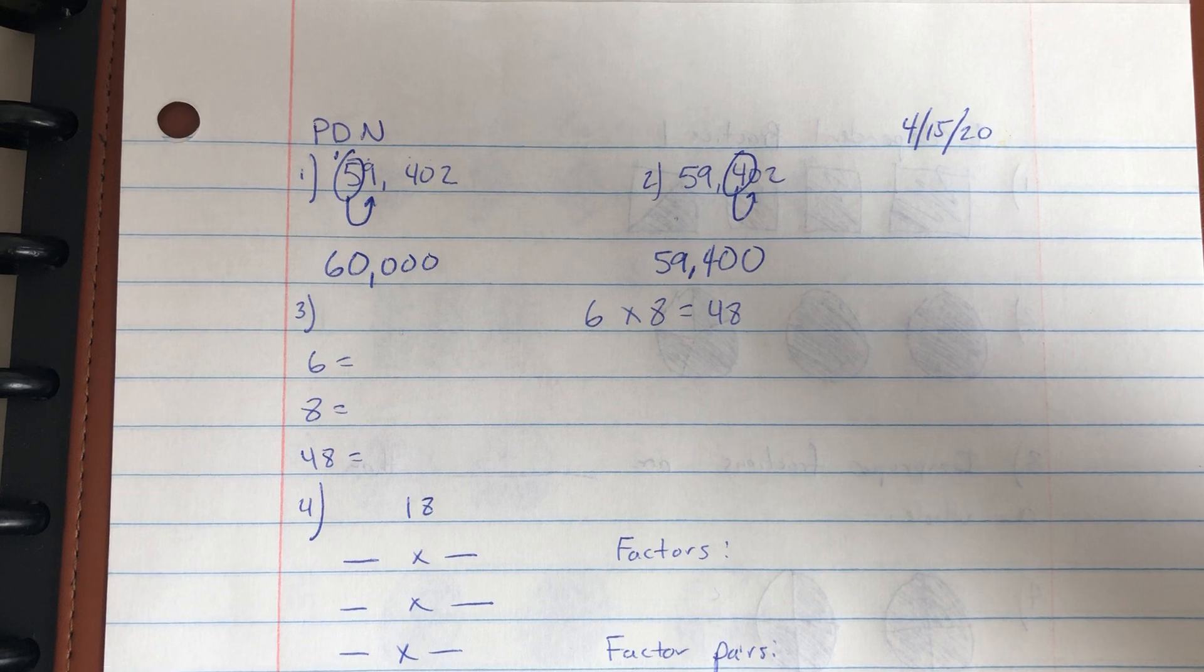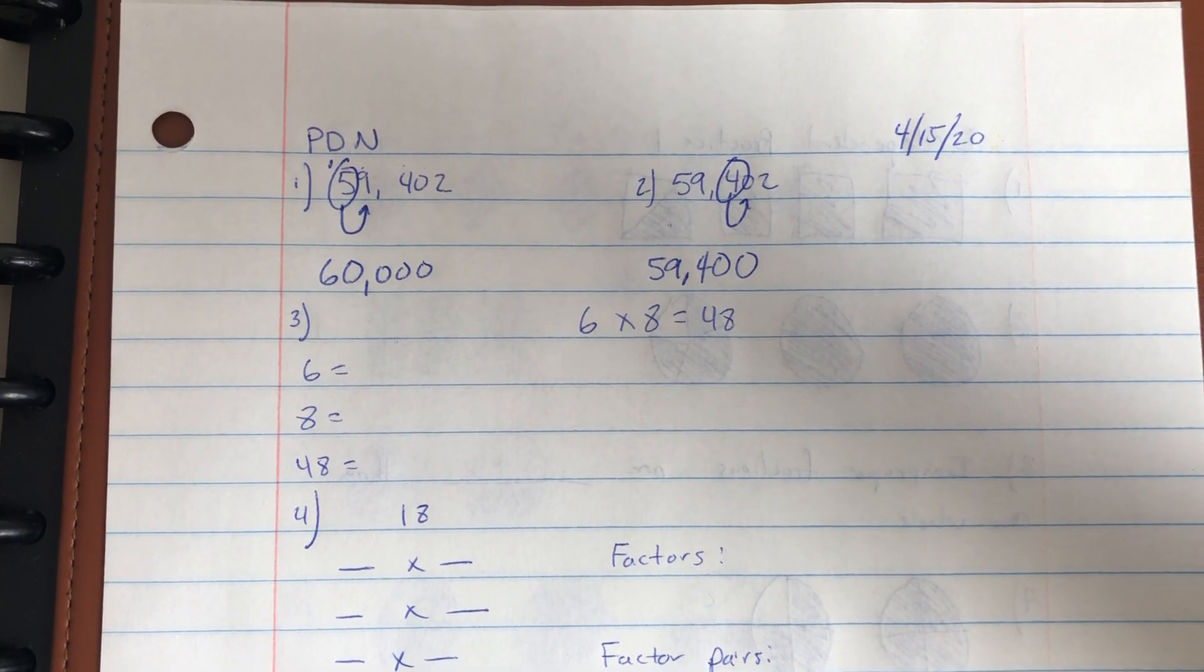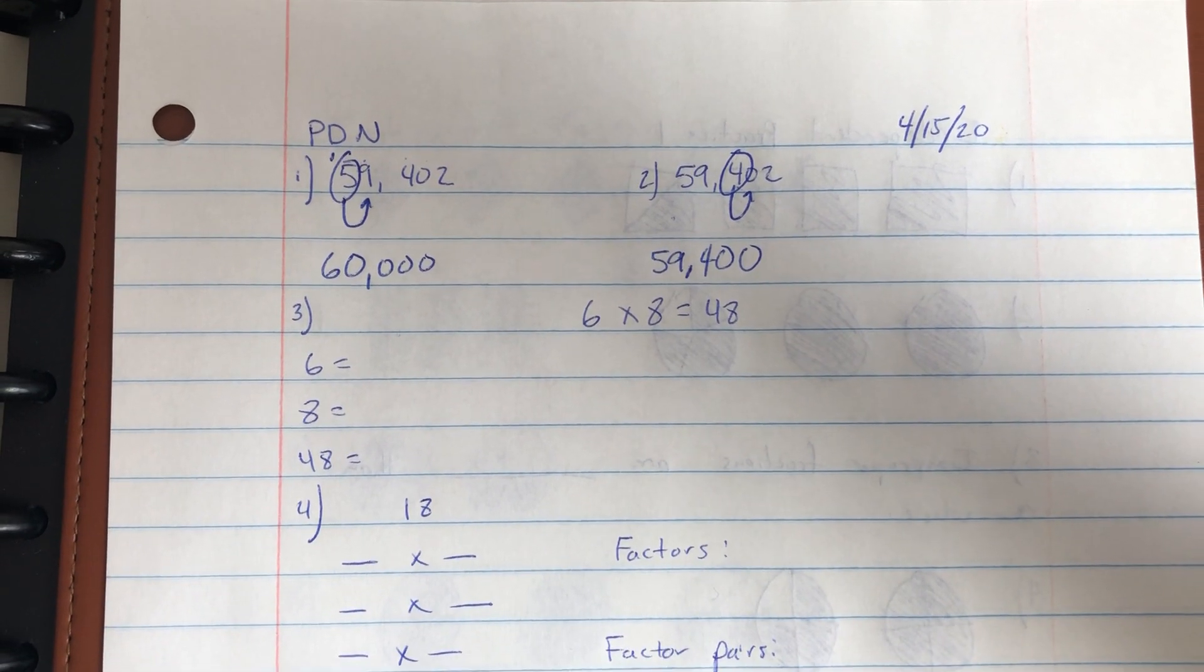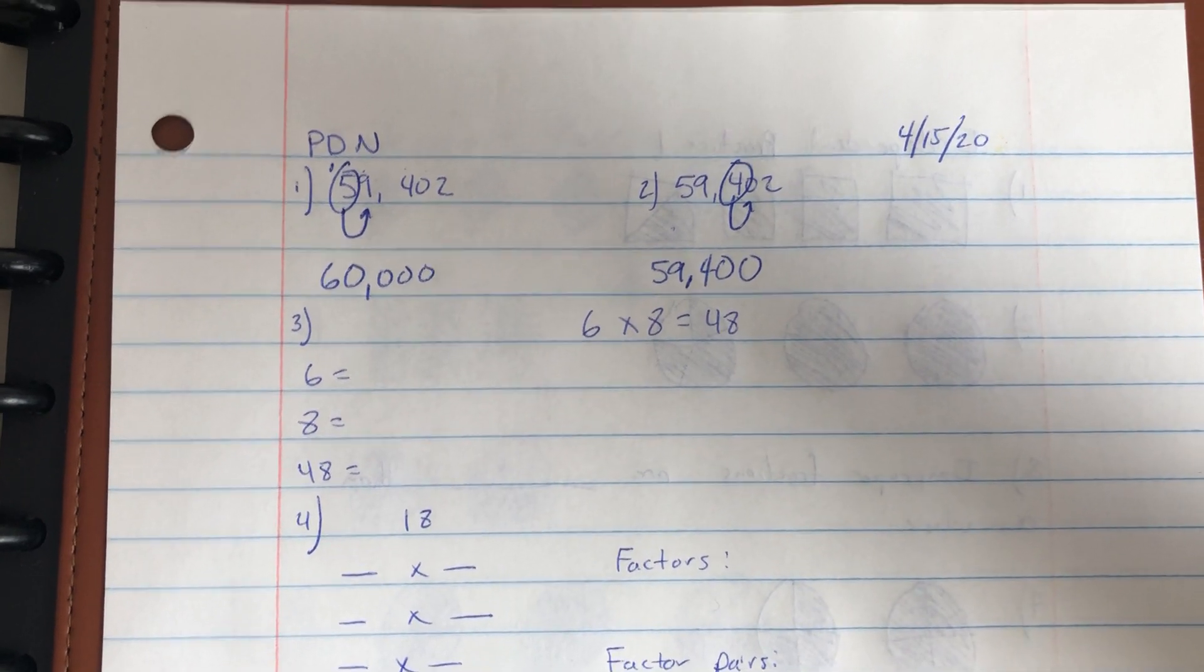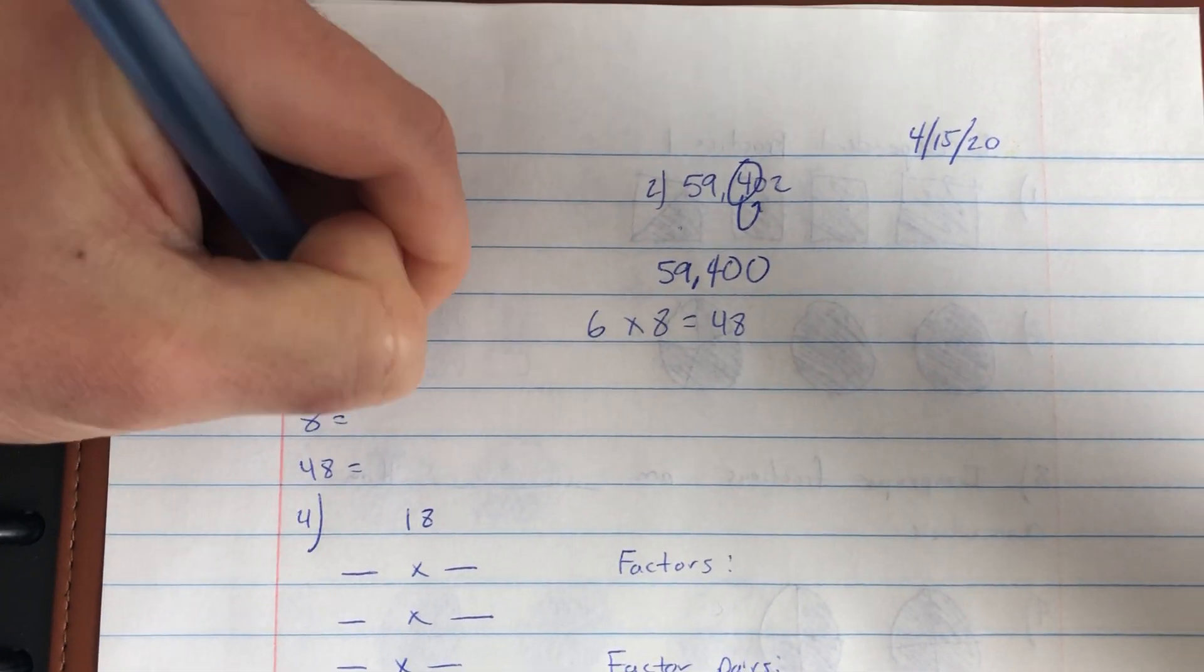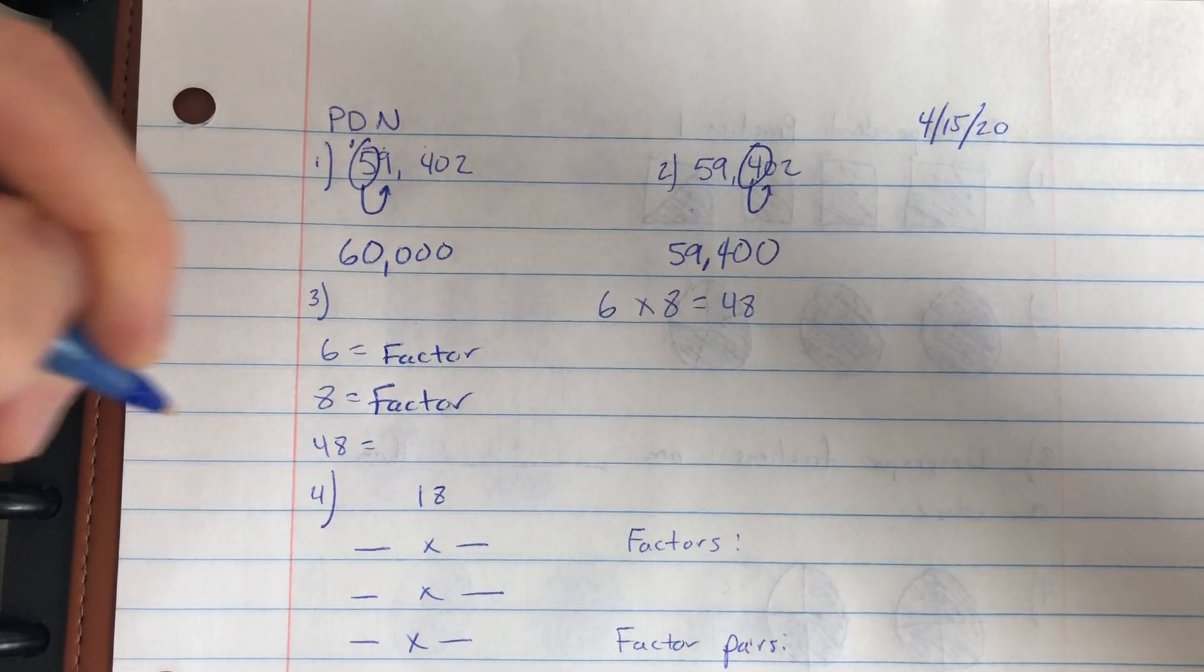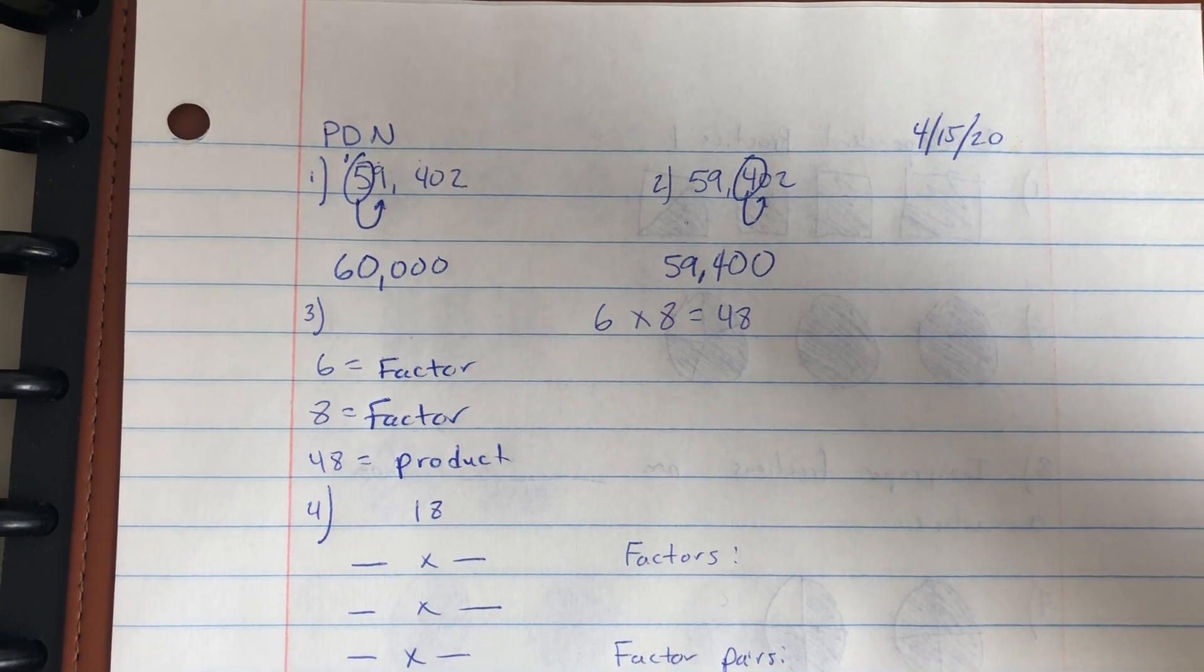Number three asked me to label six times eight equals 48 using factor and product. The numbers that multiply together to equal something is our factor, and the answer to a multiplication problem is our product. Here the two numbers that we're multiplying together are six and eight. Those are our factors, so one of my factors is six, one of my factors is eight, and my product of six times eight is 48.